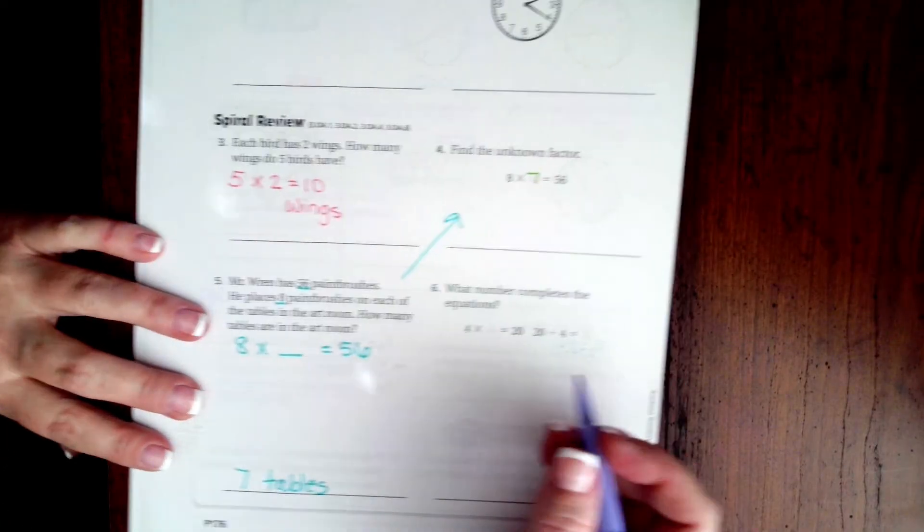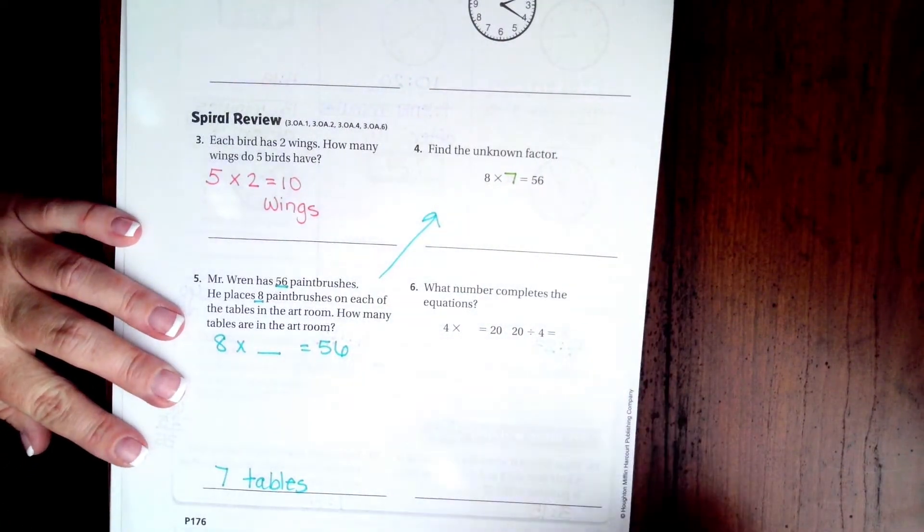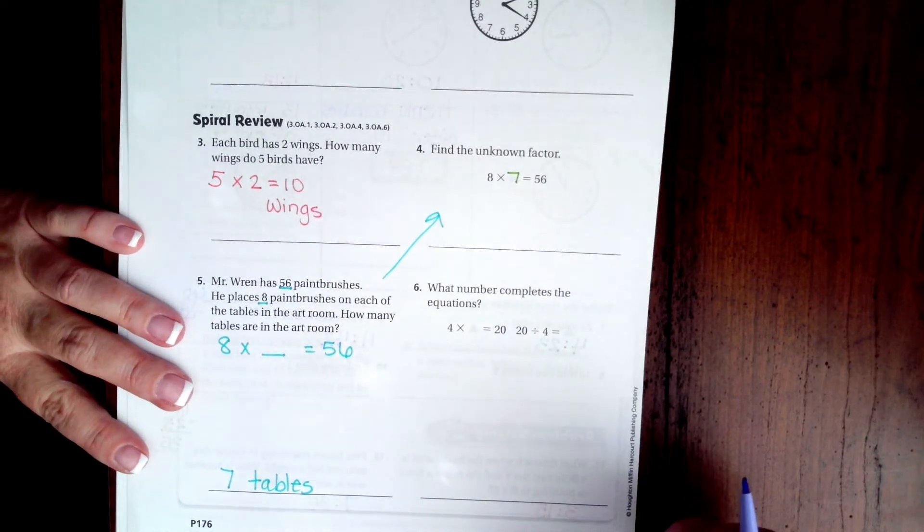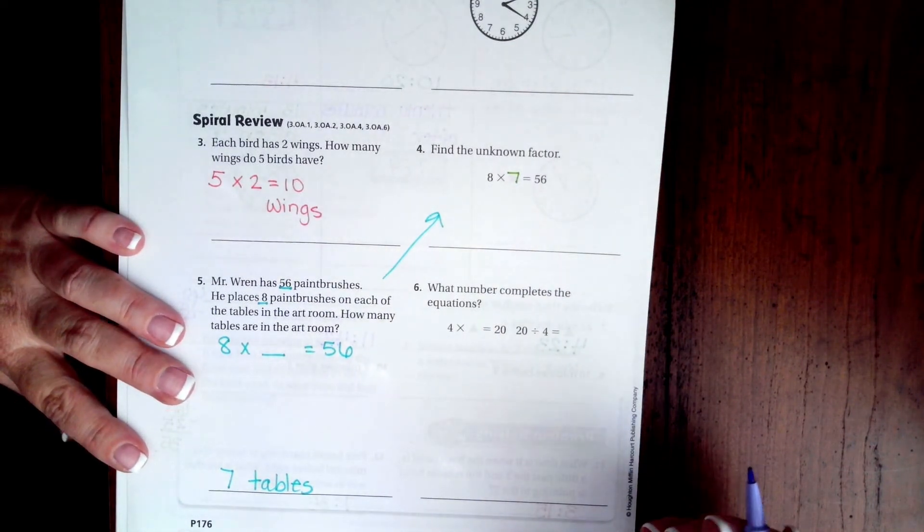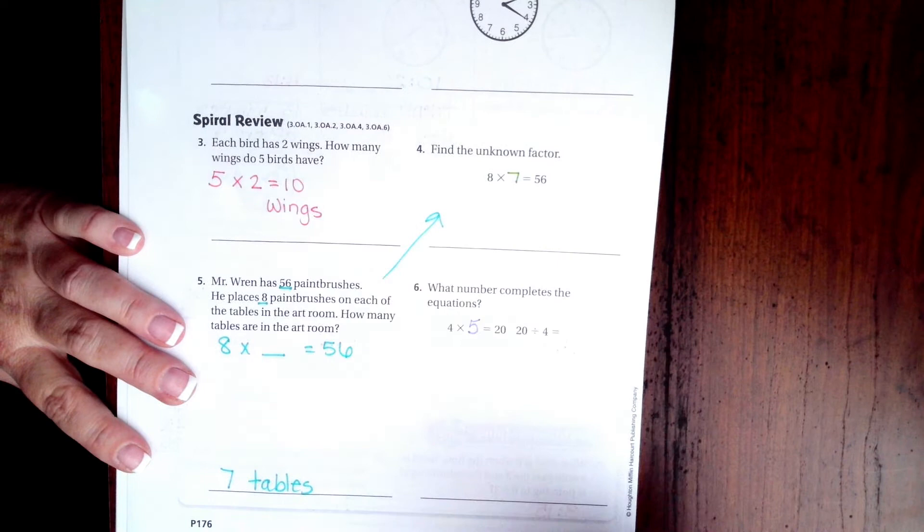4 times what is 20, or 20 divided by 4 equals what? That number is 5.